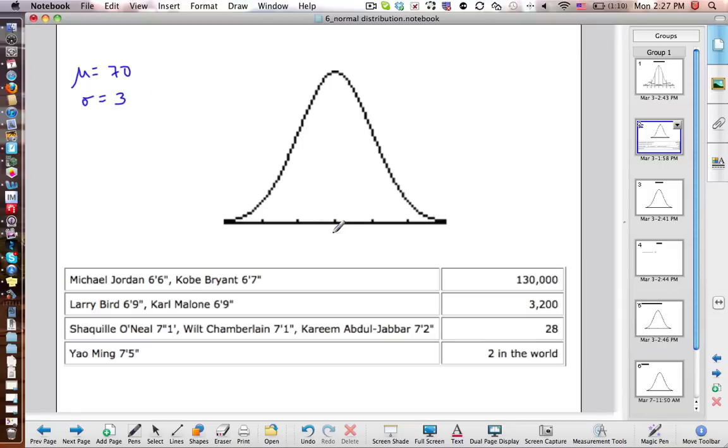So that's saying that this is an average of 70 right there. And then this would be 73, and this would be 67. This would be 76, and this would be 64. So you can see that around 68% of the population fall between 67 and 73 inches tall.